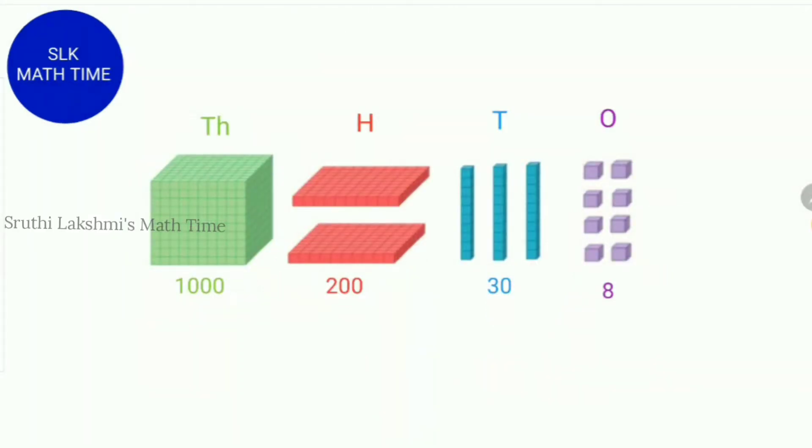Let's see an example. Let's add these base 10 blocks. So here there are 8 ones. In base 10 blocks, ones are represented as little cubes.